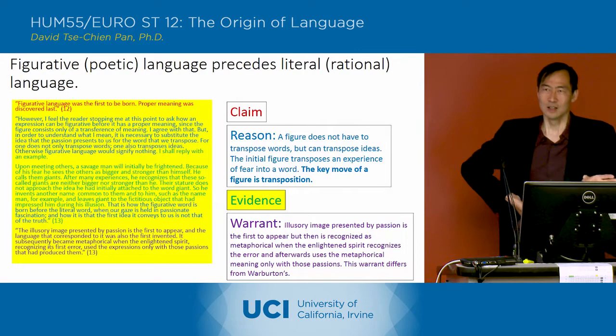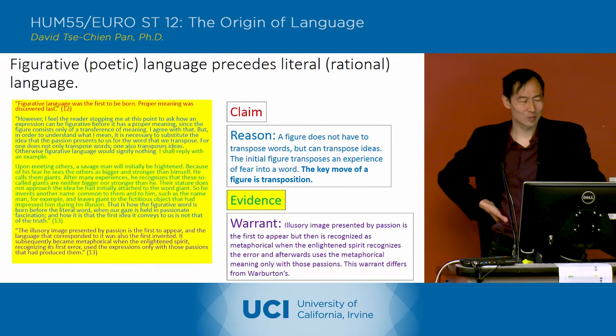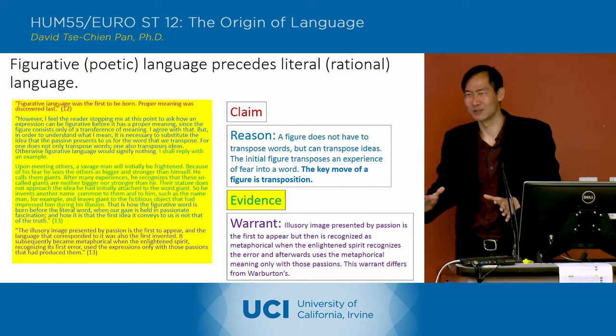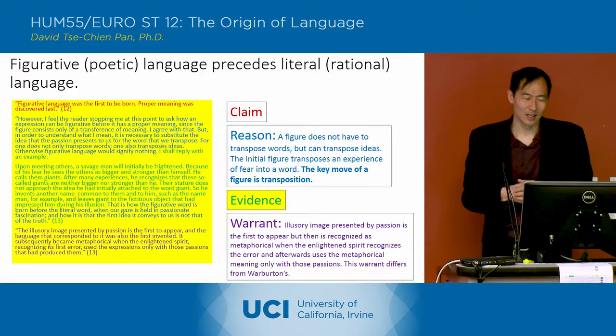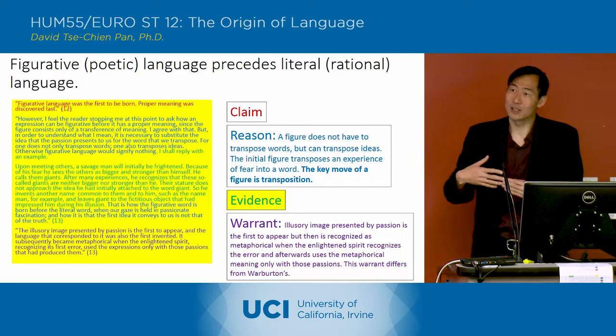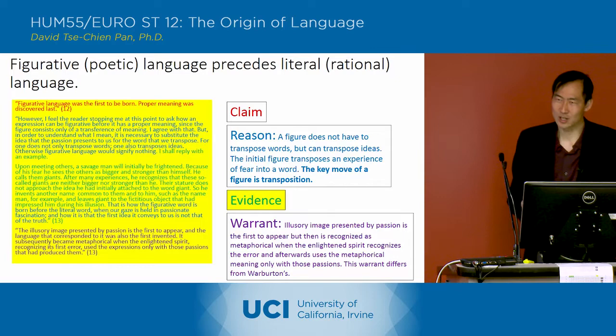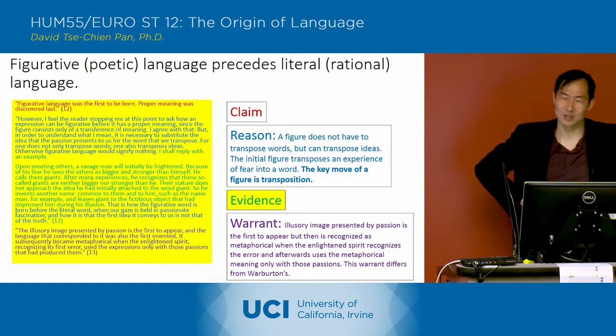He gives us the example of the giant. When a man first sees another man, he's frightened. He says, 'I don't know who this guy is — dangerous, it must be a giant, something scary and big.' That's where the word giant comes from. And then later on, he realized, 'Oh, this is just another human. I don't have to call him a giant.' So you start out with the figurative use and you move to the literal use.